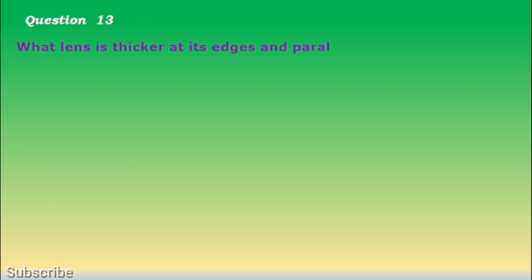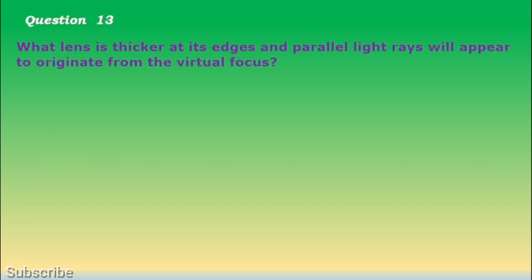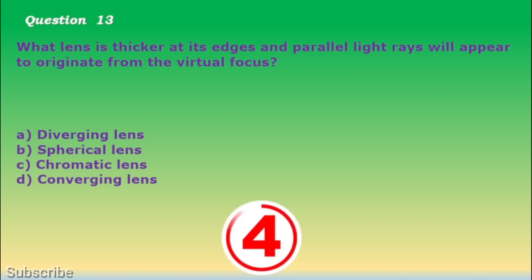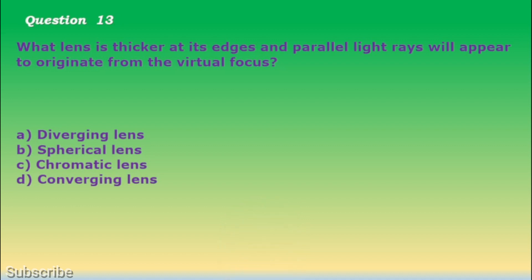Question number 13. What lens is thicker at its edges and causes parallel light rays to appear to originate from the virtual focus? a. Diverging lens, b. Spherical lens, c. Chromatic lens, d. Converging lens. The correct answer is letter a. Diverging lens.